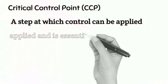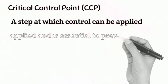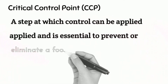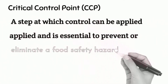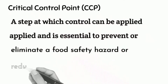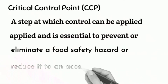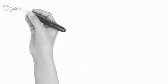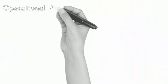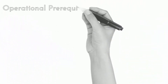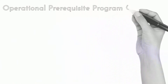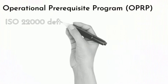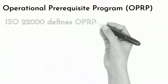CCP is essential to prevent, eliminate, or reduce food safety hazards to an acceptable level. Now we discuss the Operational Prerequisite Program. OPRP stands for Operational Prerequisite Programs.